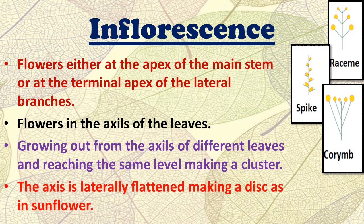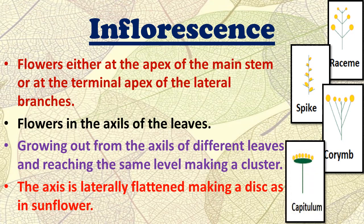The fourth type is capitulum inflorescence, where the axis is literally flattened, making a disc — as in the case of the sunflower. The sunflower has a disc-like shape, and this type of inflorescence is known as capitulum.